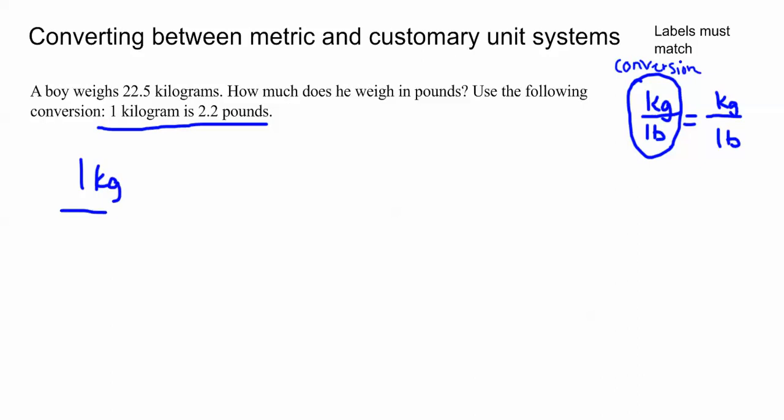So we're going to put our conversion on one side: one kilogram over 2.2 pounds is equal to the other value they gave us, 22.5 kilograms, which is going to go in the numerator so our labels match. Again make sure you get those labels into your proportion so that way you can know with confidence that you're setting it up correctly. So we have kilograms to pounds is equal to kilograms to pounds.